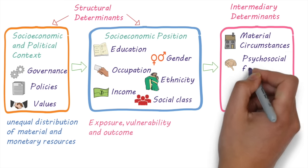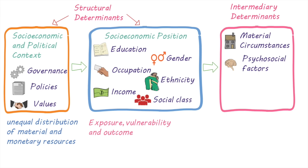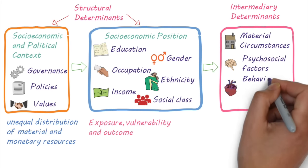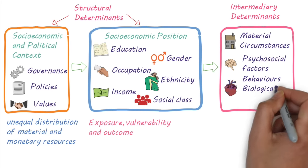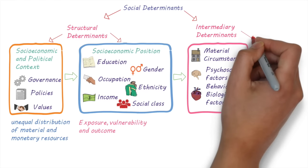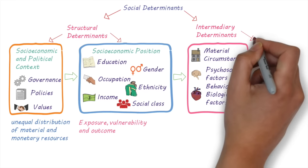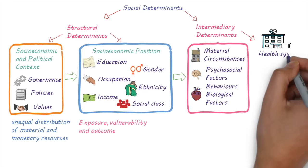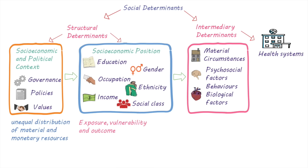Intermediary determinants also include psychosocial circumstances, like stressful living circumstances, relationships, and social support, as well as behavioral and biological circumstances. In addition, health systems have an impact on the type and quality of health care available to people, and determine how easy it is for people to access health services and receive the care they need.